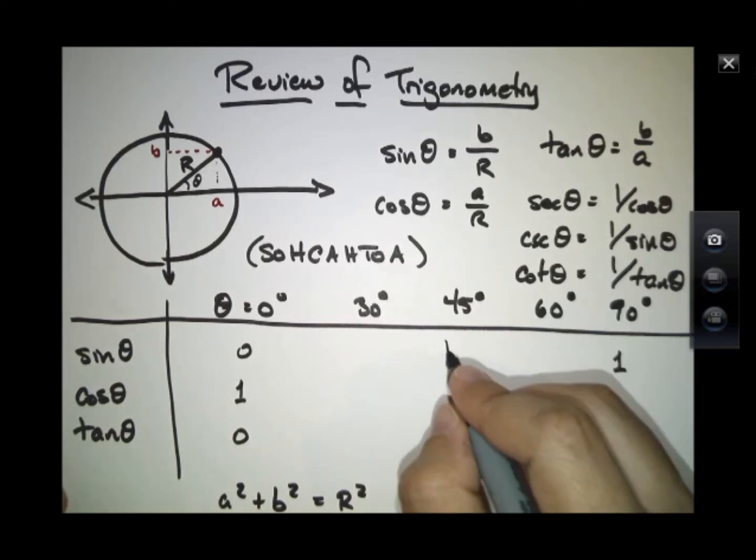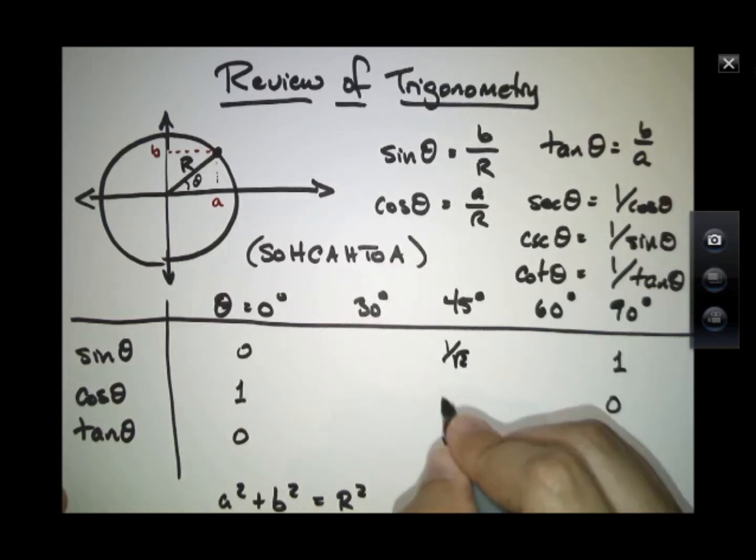And that allows us to find out things like this is 1 over root 2, this is 1 over root 2, and this is 1.